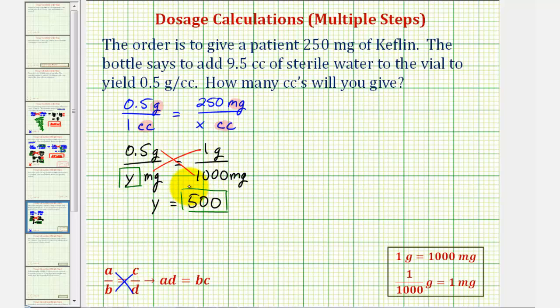Which means now, in the original proportion, we can substitute 500 milligrams for 0.5 grams. Now we're going to have 500 milligrams to 1 cc is equal to 250 milligrams to x cc's.